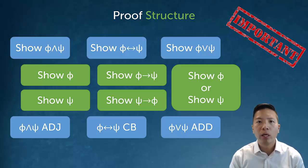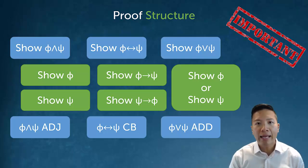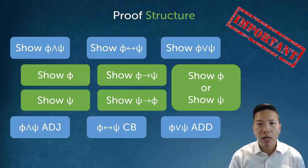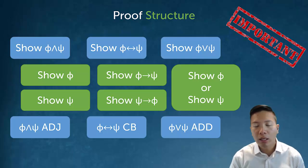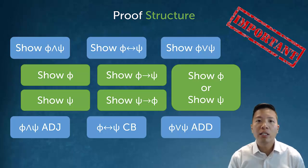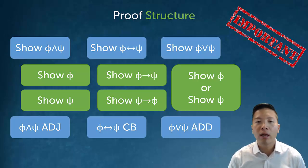Introduction rules are also very important because they reveal proof structure, and proof structure is very helpful in figuring out what we should do. If I want to show an and statement — phi and psi — proof structure tells me I need to show both sides: first phi, then psi. These can be done entirely separately, in any order, as long as I show both. If I have both parts, I can use adjunction to conclude the and statement.